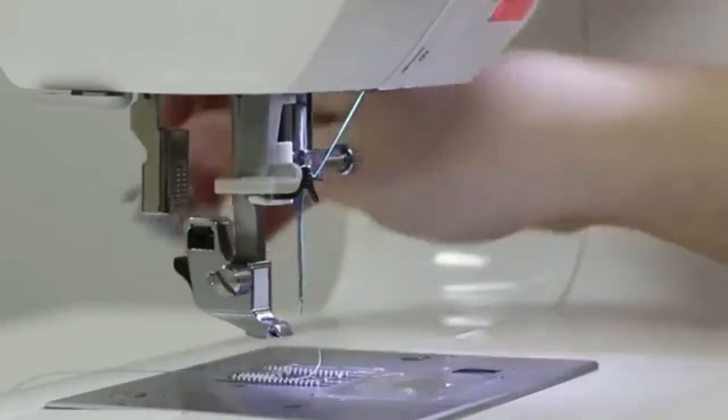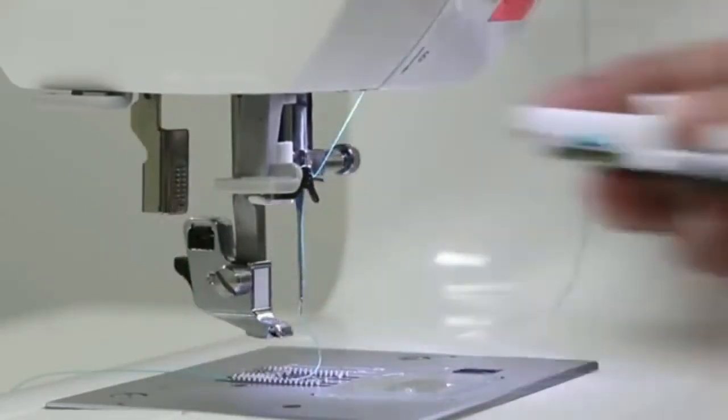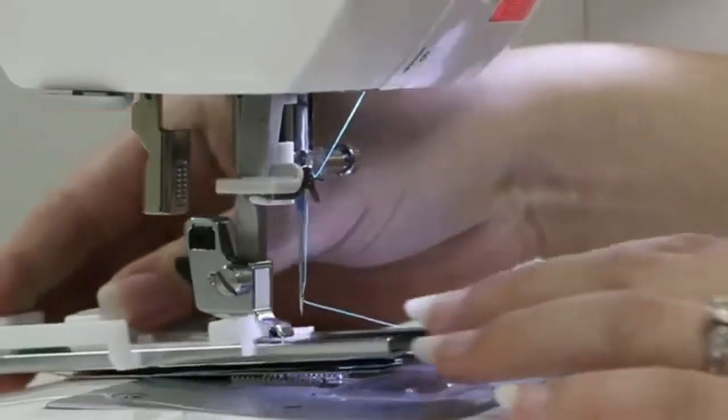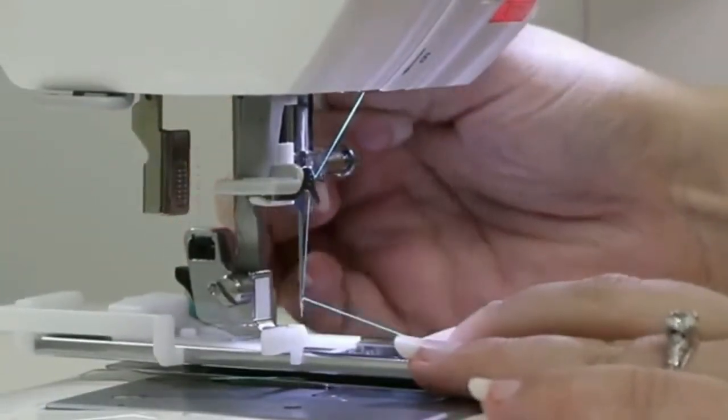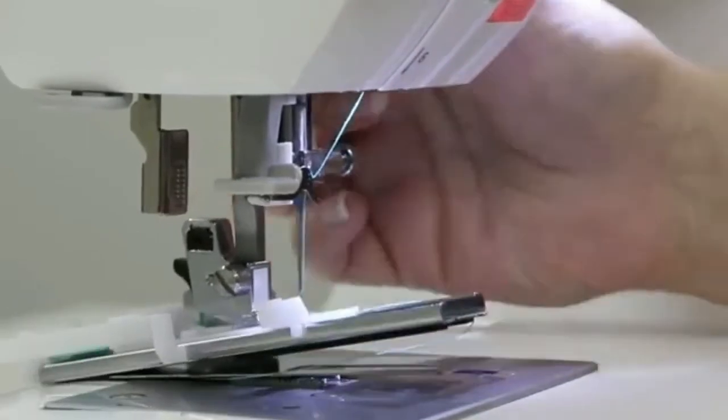Remove the presser foot that's on the machine and attach the buttonhole foot. Sometimes the feed teeth kind of grab onto it, so just wiggle it around until you get in the right position where you can lower this and snap the foot into place.